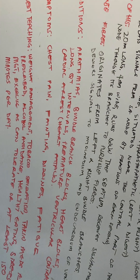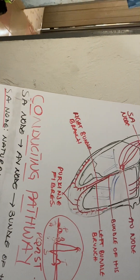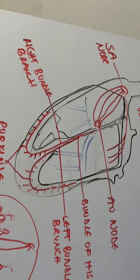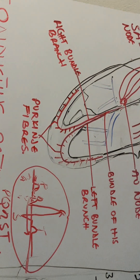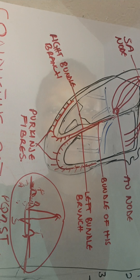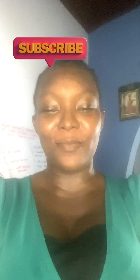This brings us to the end of today's video. We've been talking about the cardiac electric conducting system, which involves the SA node, the AV node, the bundle of His with its right and left branches, and the Purkinje fibers. Thank you very much for watching. If this is your first time, don't forget to subscribe and turn on your notification bell. Like, share, and comment on our videos, and see you in the next video.